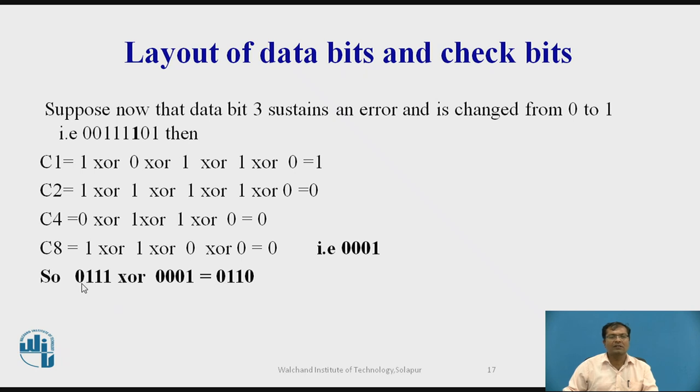So the previous value 0, 1, 1, 1 xor with 0, 0, 0, 1 and finally it is 0, 1, 1, 0. That indicates 6, means position 6 is nothing but D3 position.